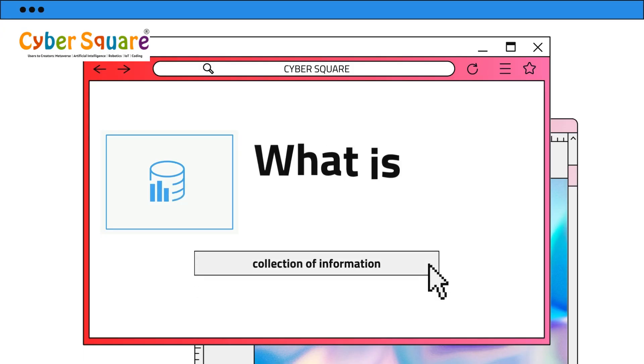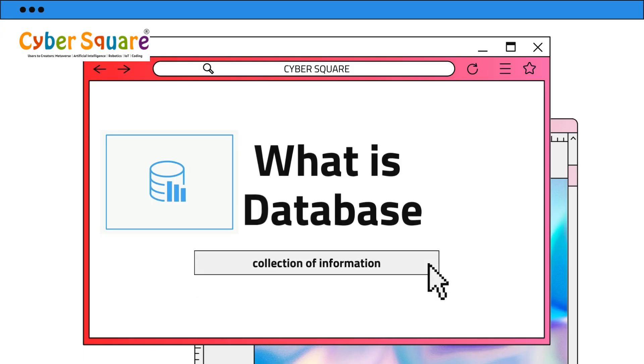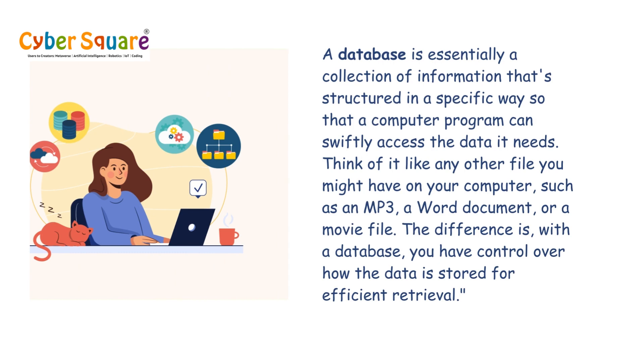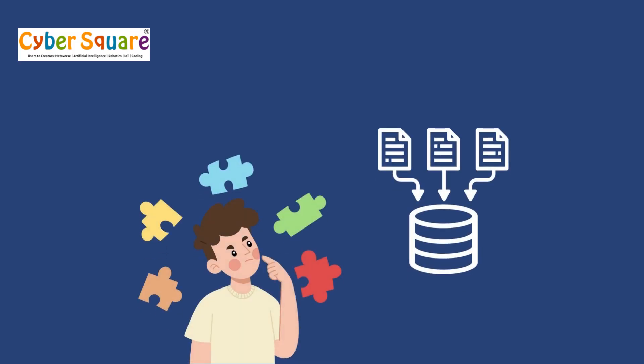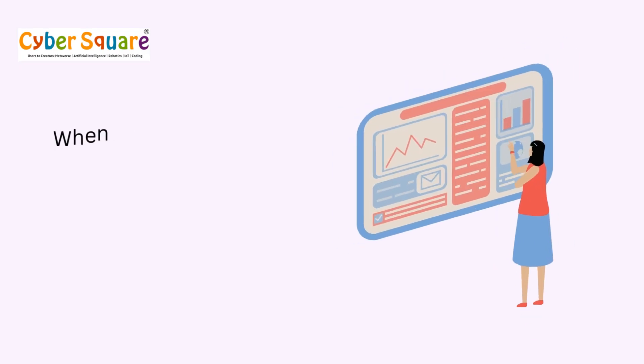What is a database? A database is essentially a collection of information that's structured in a specific way, so that a computer program can swiftly access the data it needs. Think of it like any other file you might have on your computer, such as an MP3, a Word document, or a movie file. The difference is, with a database, you have control over how the data is stored for efficient retrieval.